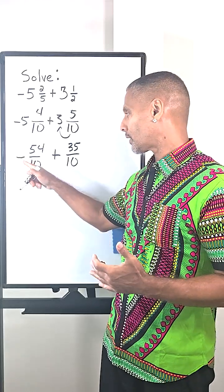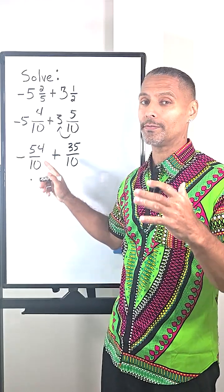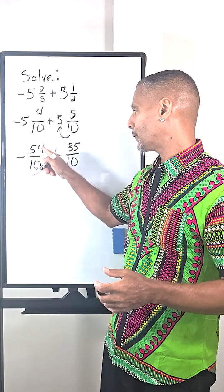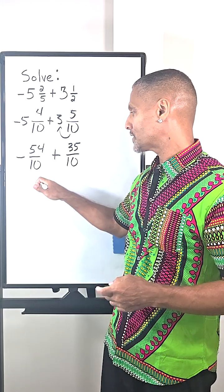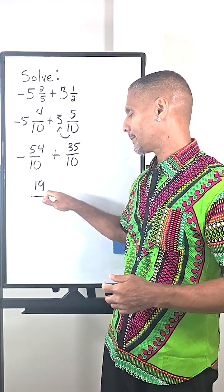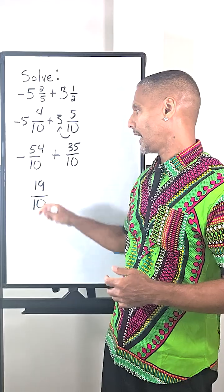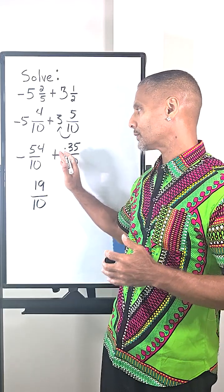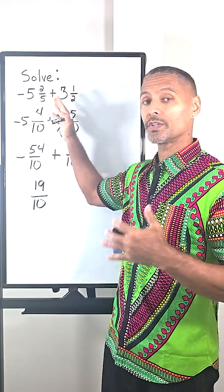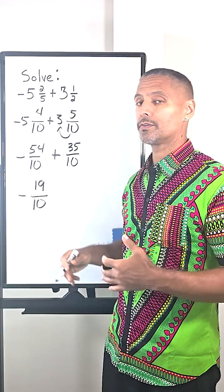All right. Now, once again, our signs are different, which means we find the difference. So we take 54 and 35 and subtract, which is 19. The denominator stays the same. And because we had a larger absolute value with the first term, which is negative, we have to use negative for the answer.